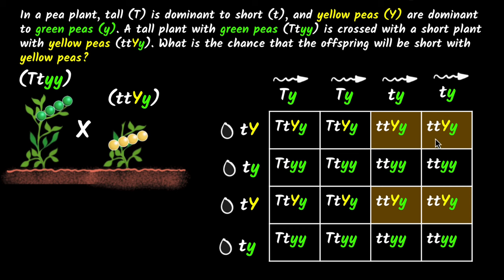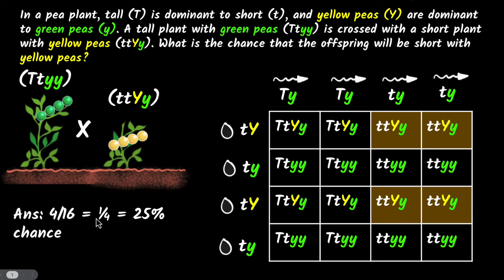Two capital Y's would have also worked, but I don't have two capital Y's — it's not there anywhere. So I need at least one capital Y, and that's what I get. So what is the answer? I get four out of a total of 16. So my answer is 4 out of 16, which is one-quarter — or if you want that in percentages, it's 25%. So there's a 25% chance that the offspring will be short with yellow peas.